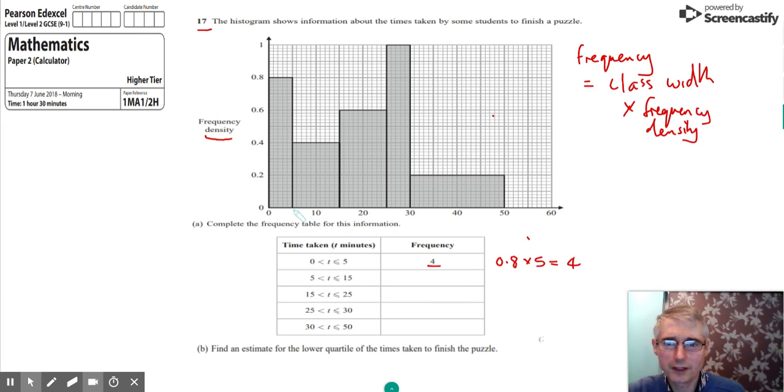So we can see the next group, which is 5 to 15, the width of that is actually 10. If we multiply that by the height of the group, which is 0.4, that gives us the frequency there, which is 4.